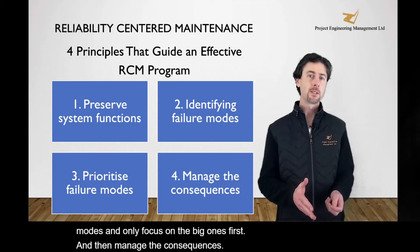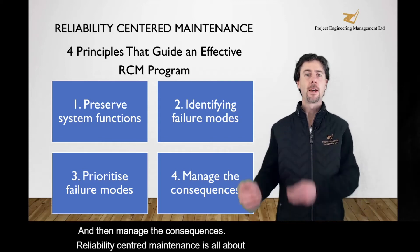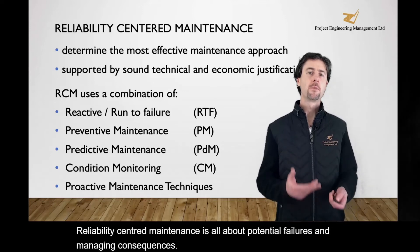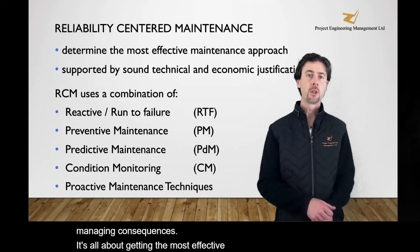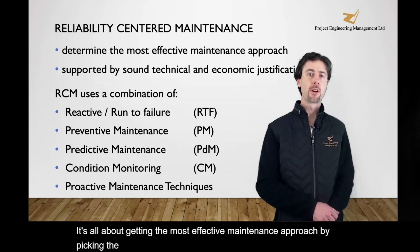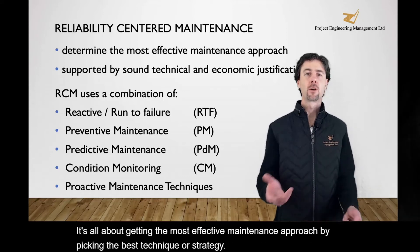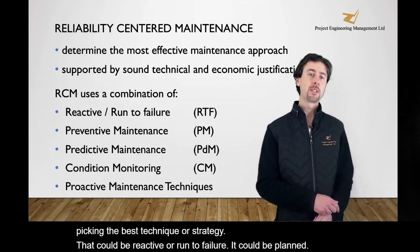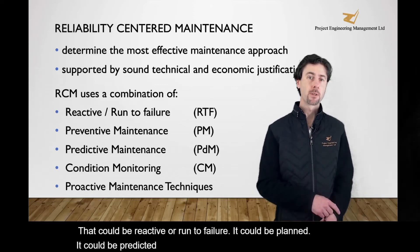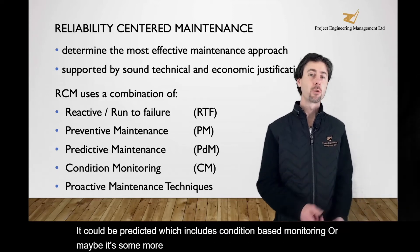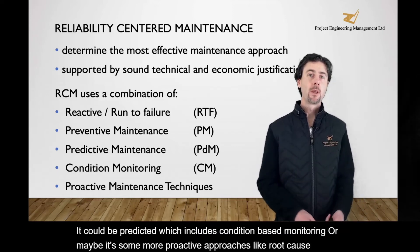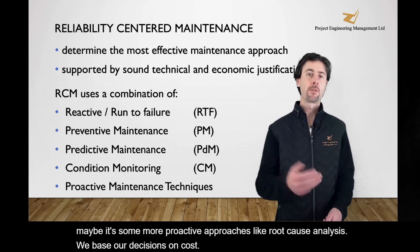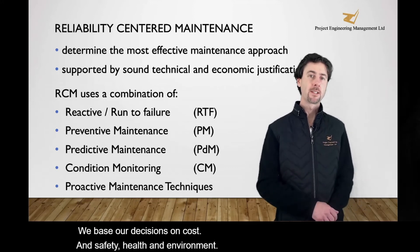Reliability centred maintenance is all about potential failures and managing consequences. It's about getting the most effective maintenance approach by picking the best technique or strategy. That could be reactive or run-to-failure, it could be planned, it could be predictive — which includes condition-based monitoring — or maybe some more proactive approaches like root cause analysis. We base our decisions on cost and safety, health and environment, or the effect on our production.